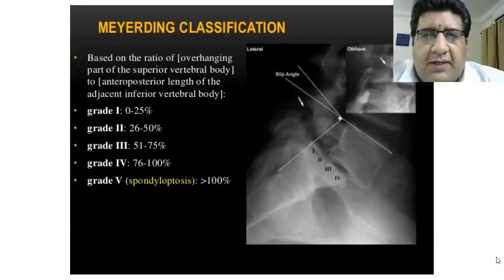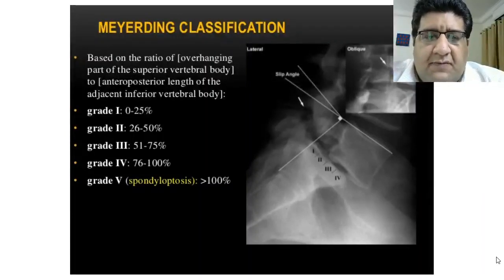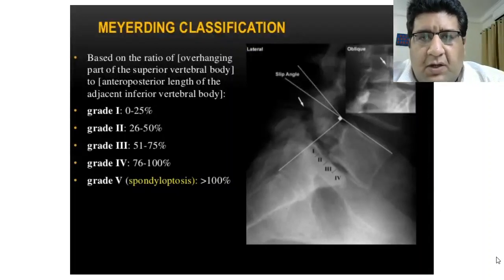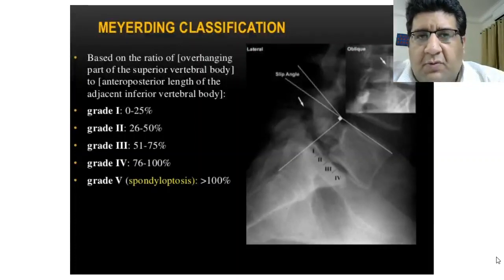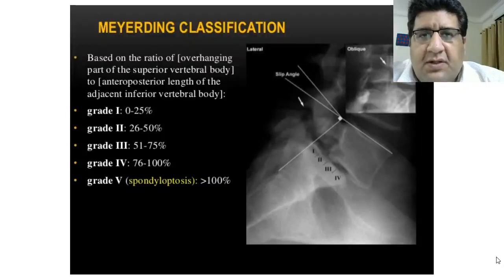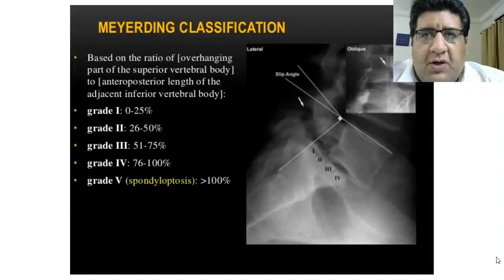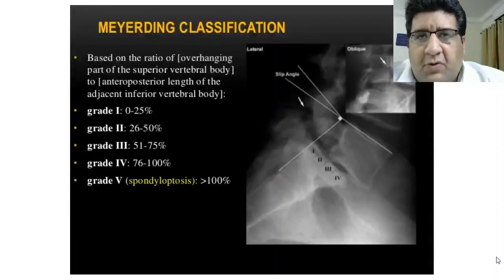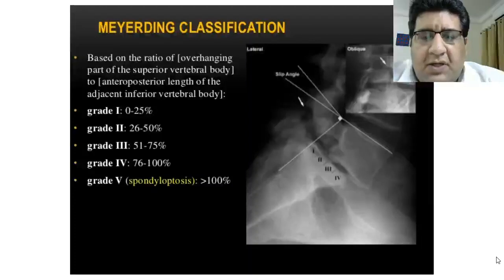On this X-ray you can clearly see the vertebral body of L5, the vertebral body of S1, and a forward slippage as well. The fundamental basis of Meyerding's grading is a ratio — the ratio of the overhanging part of the superior vertebral body. You take the inferior vertebral body and draw an antero-posterior length, connecting the anterior-most part to the posterior-most part. After establishing that AP length, you divide it into four equal quadrants.